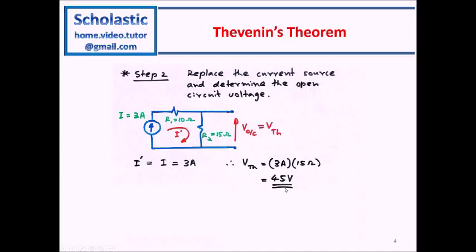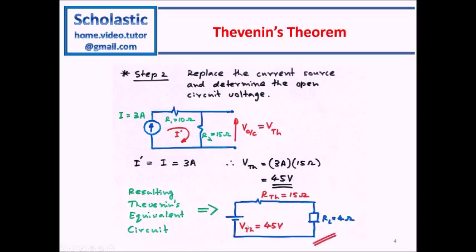Now our task is to draw the Thevenin's equivalent circuit. The resulting Thevenin's equivalent circuit is simply this one, where this is the Thevenin's equivalent voltage, R-Thevenin's is the Thevenin's equivalent resistance we found in the previous page, 15 ohms, and this is the load resistor. So this is the answer.